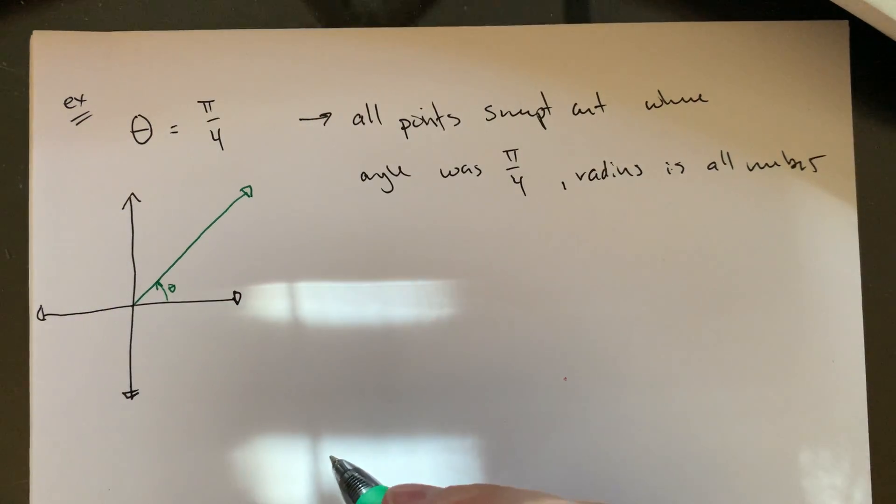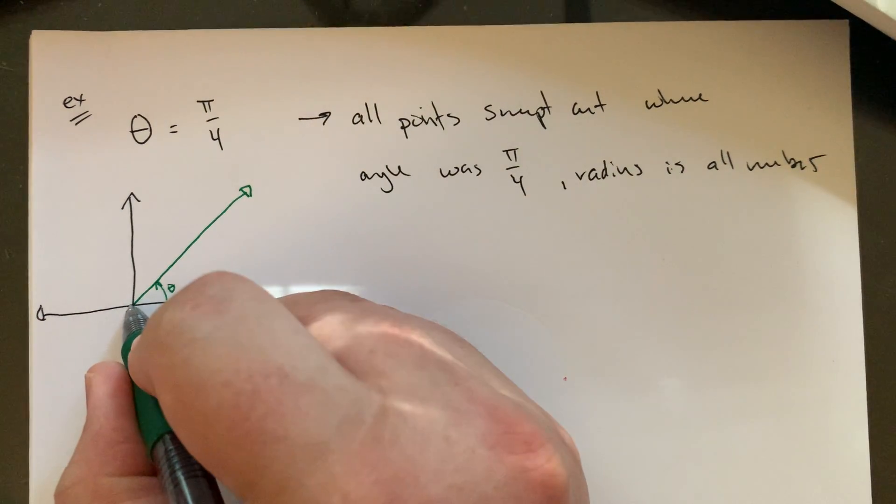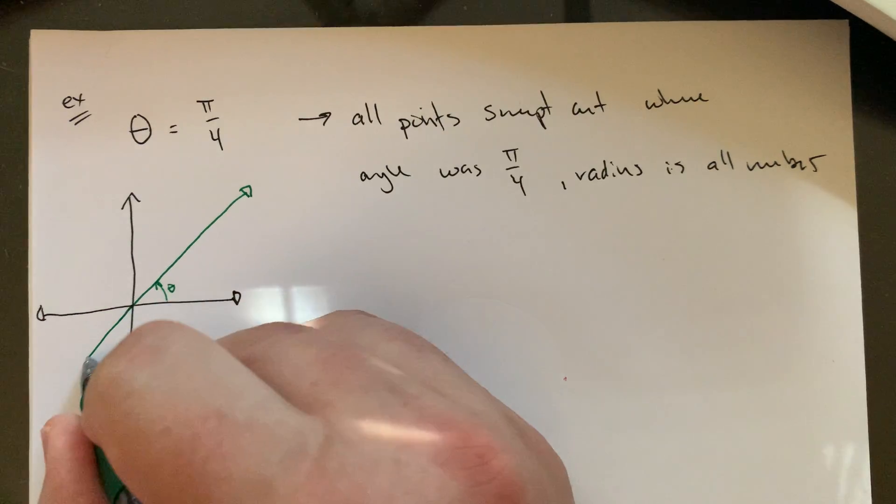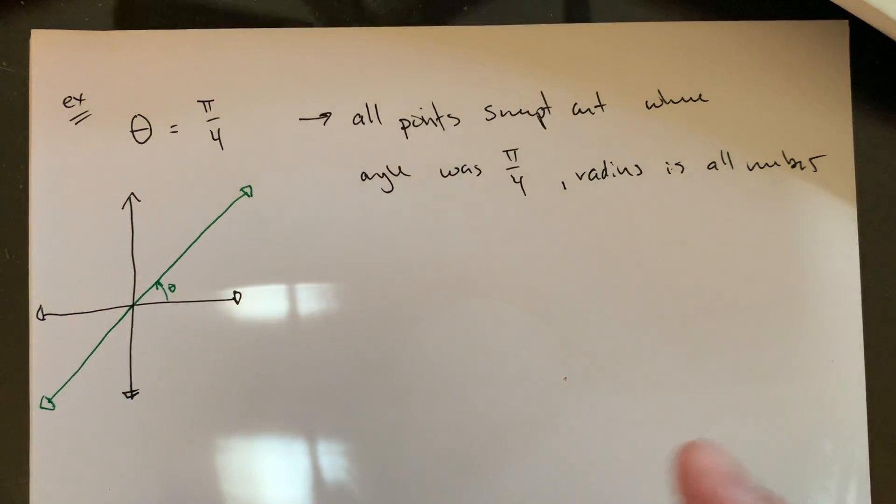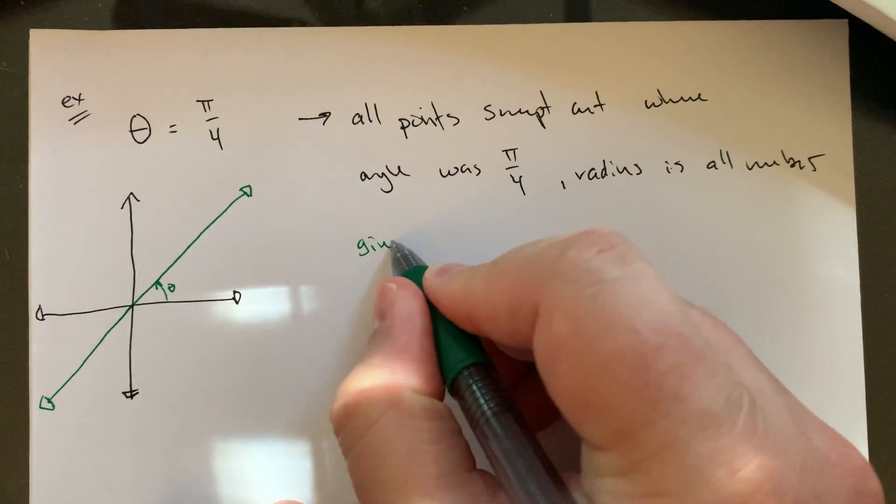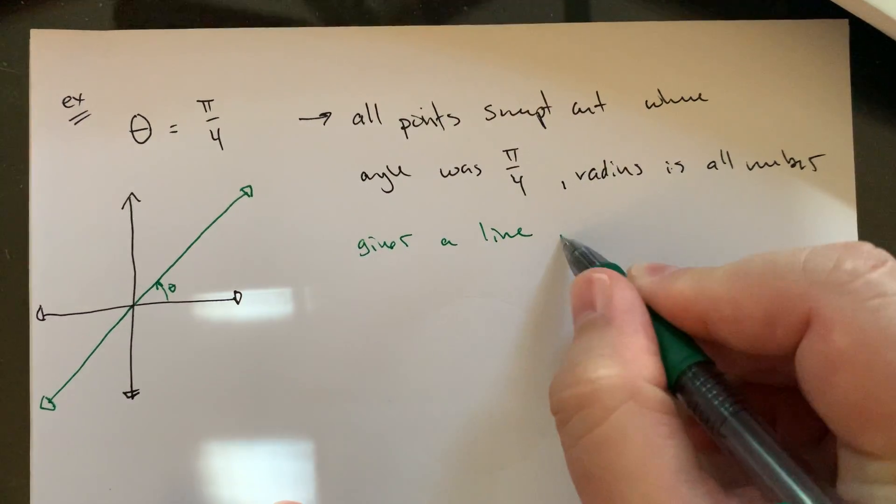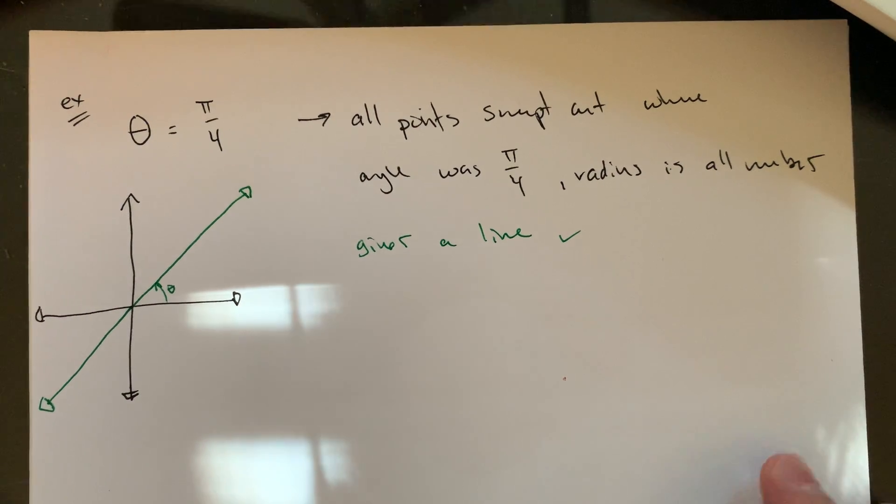So I essentially get what would be my kind of terminal side of the angle going out. I'm also going to include negative radius values. So my negative radius values would sort of head the other direction. And essentially what I'm getting here is a straight line. So this just gives a line. I mean, it looks like it would give y equals x, this sort of 45 degree angle.